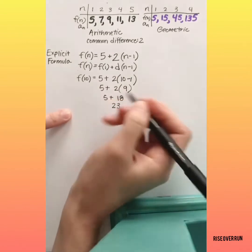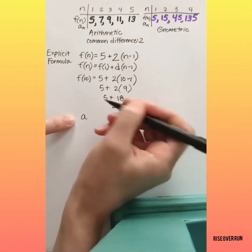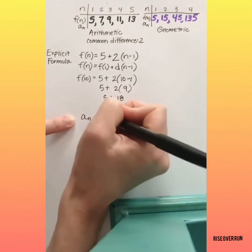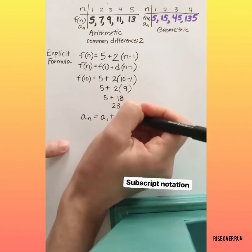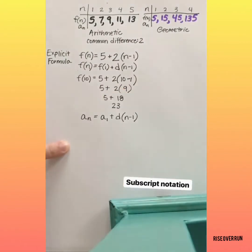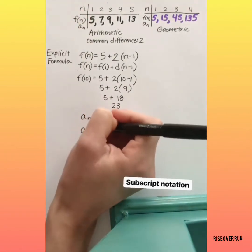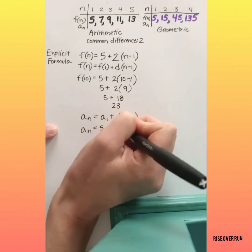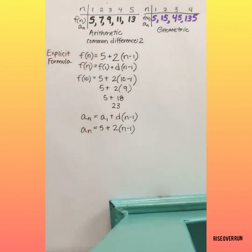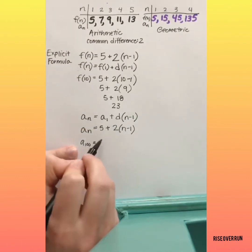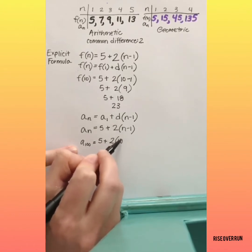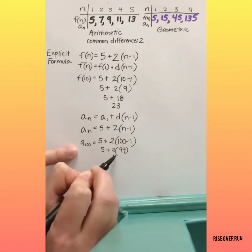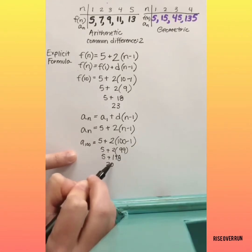Subscript notation is very similar but looks a little different. Usually we use an a, and then the small subscript is n, equals the first term plus the common difference times n minus 1. For our sequence, the formula in subscript notation would be a sub n equals 5 plus 2 times n minus 1. Let's use subscript notation to find the 100th term: 5 plus 2 times 100 minus 1. 100 minus 1 is 99. Times 2 is 198. Plus 5 is 203.